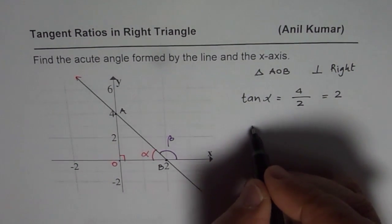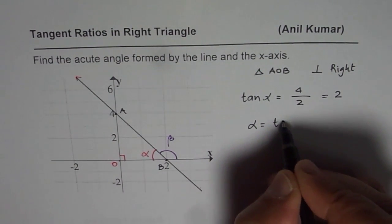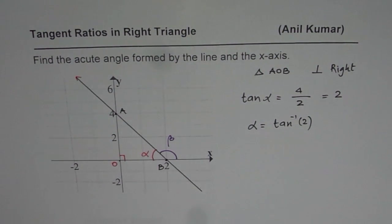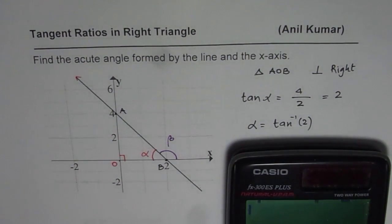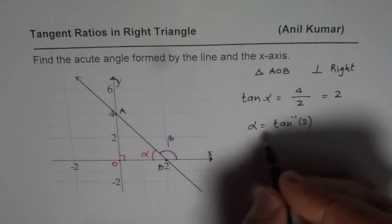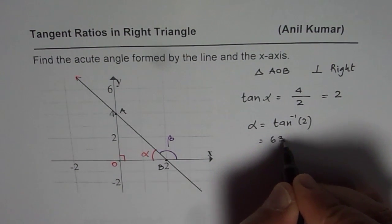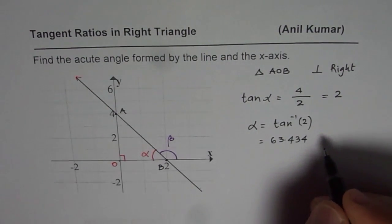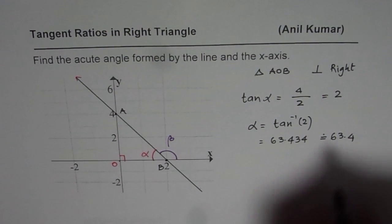Now what is alpha? Alpha equals tan inverse of 2. So we can use a calculator to find the answer. Alpha is tan inverse of 2 which equals 63.434. Rounding to one decimal place we get the answer 63.4 degrees.